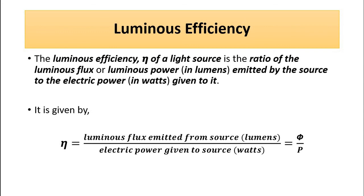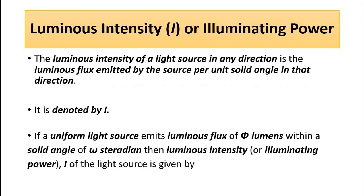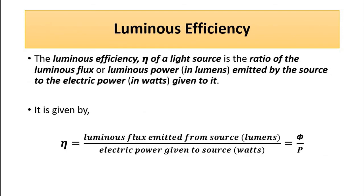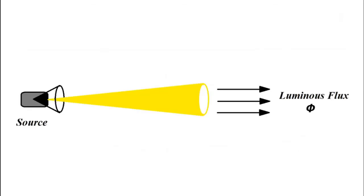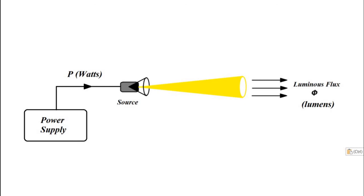For luminous efficiency, this relationship is very important: 683 lumens of green light is equal to one watt of electrical power. This correlation is very important for luminous efficiency calculations. So we have discussed luminous flux or luminous power, then luminous intensity or illuminating power, then luminous efficiency. In the next video, we will be discussing about the other photometric quantities. I hope you like this video — please subscribe to my channel Engineering Tutorial for more such videos related to engineering, science, and technology. Have a great day, thank you very much.